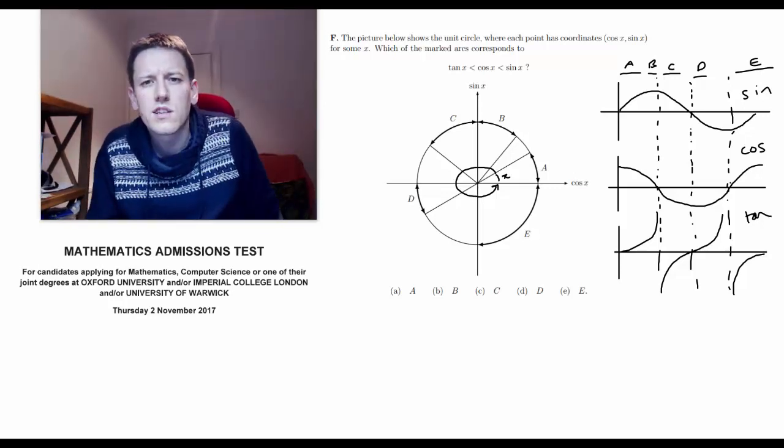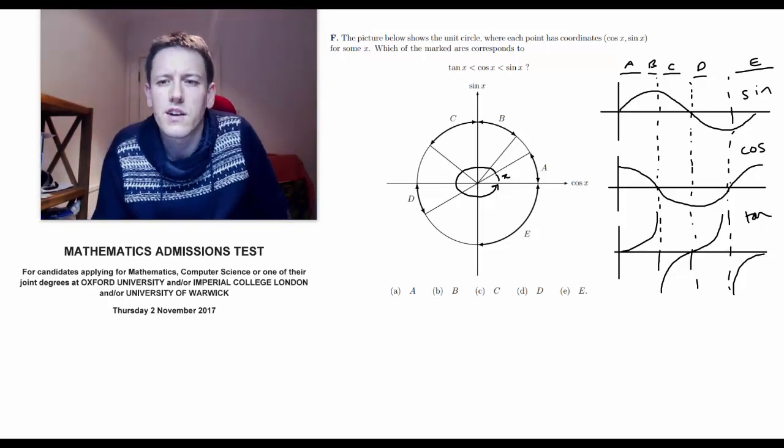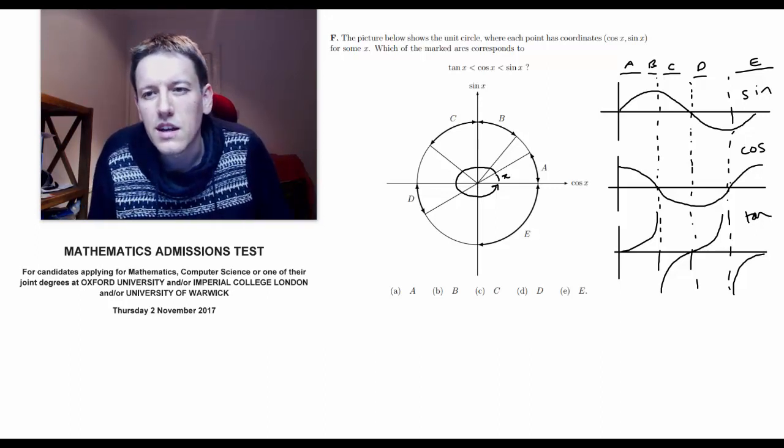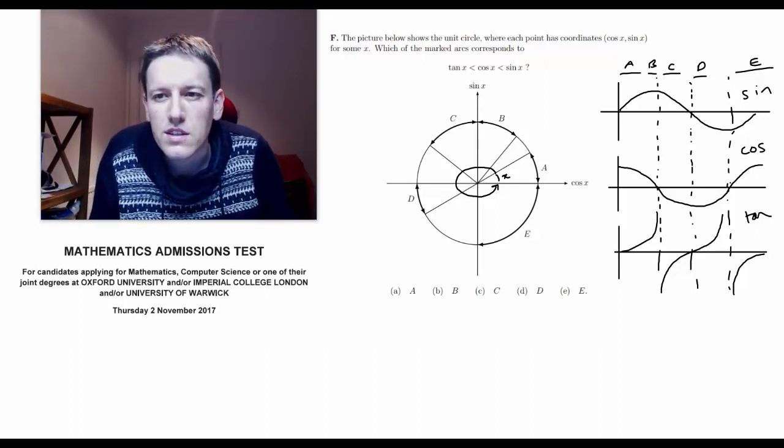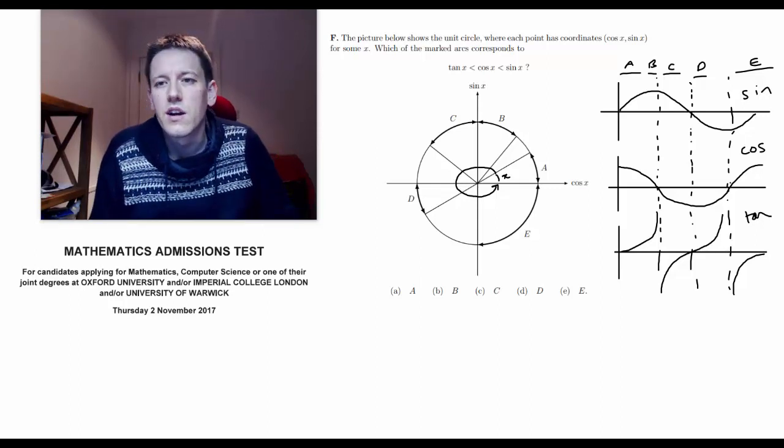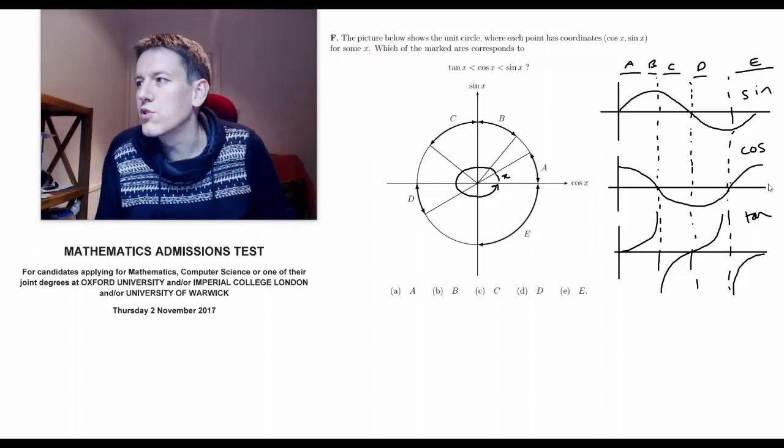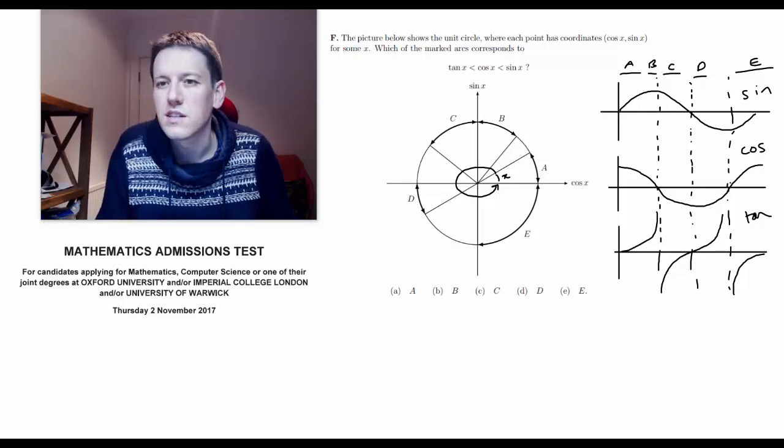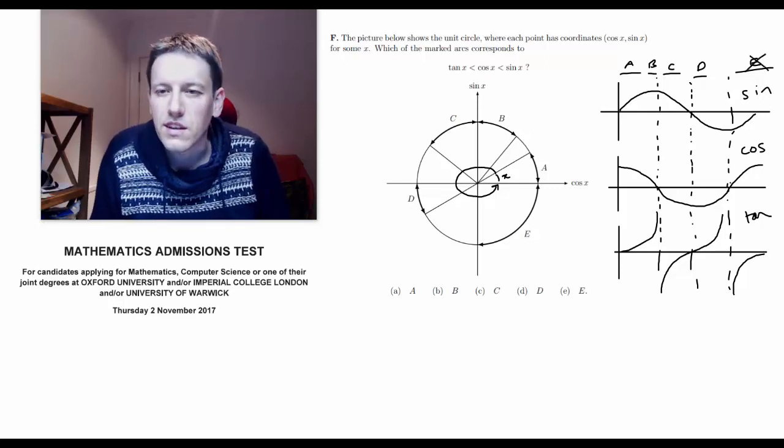So let's look at cos θ less than sin θ first. So I would need one of these regions to have cos θ being less than sin θ. Now, we can see immediately that's not true in e here. Cos θ is positive, sin θ is negative. So I can definitely get rid of e.